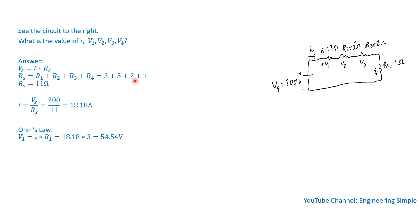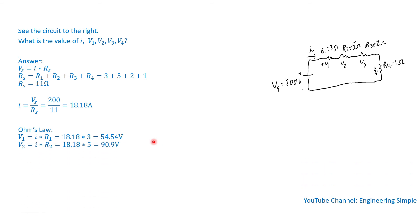Now we can apply Ohm's law. V1 equals the current times R1, so it's 18.18 times 3, which is 54.54 volts. Similarly, V2 is 90.9 volts, V3 is 36.36 volts, and V4 is 18.18 volts.